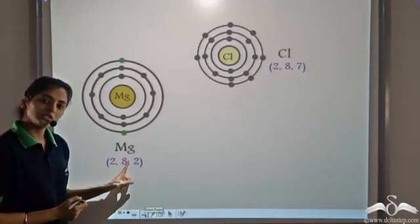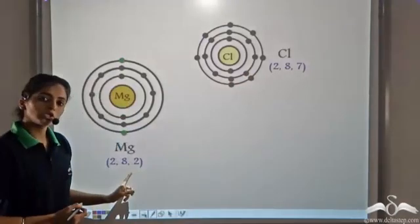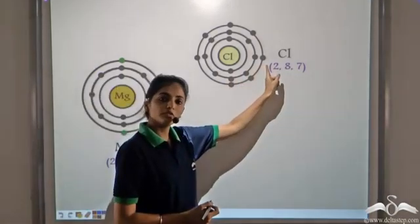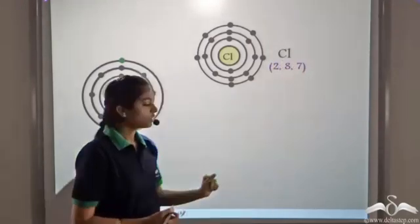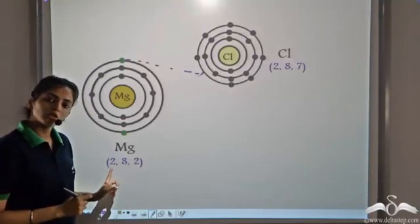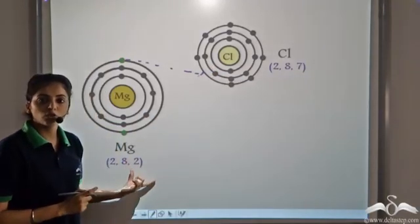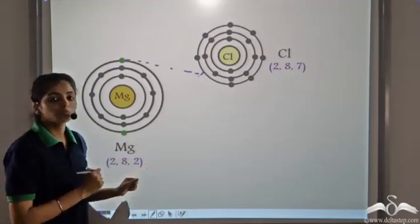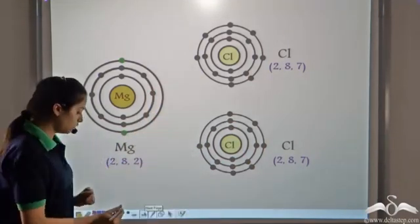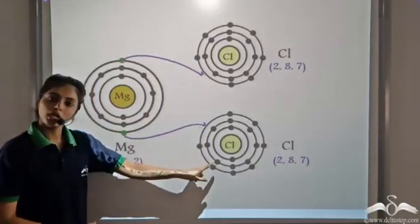The electronic configuration of magnesium is 2, 8, 2 and the electronic configuration of chlorine is 2, 8, 7. To achieve the octet structure, magnesium has to get rid of two electrons and chlorine needs one extra electron. If magnesium gives one electron to one chlorine atom, that chlorine reaches 2, 8, 8, but magnesium still has configuration 2, 8, 1 — it is not yet stable. So magnesium needs two chlorine atoms, each short of one electron, and gives one electron to each.